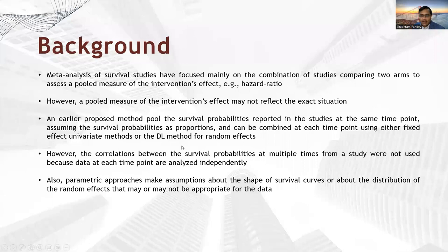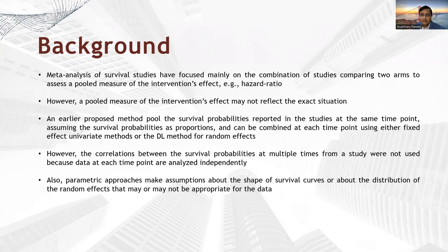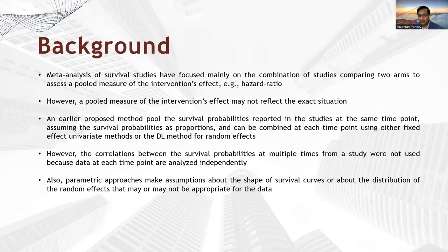To give a brief background: there were a few existing methods which suggest pooling the survival probabilities at multiple time points. The meta-analysis of survival studies has focused mainly on the combination of studies comparing two arms where we assess a pooled intervention effect — a pooled measure of intervention effect, for example hazard ratio. But sometimes the pooled measure of intervention effects may not reflect the exact situation. It can give you the direction, but it will not tell you exactly how different curves are behaving over time.